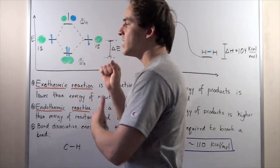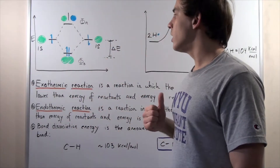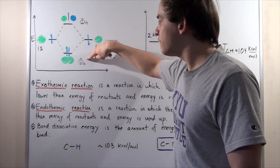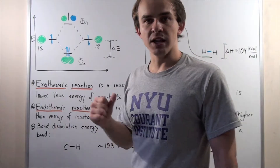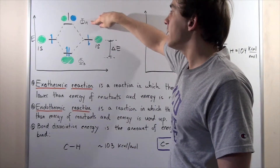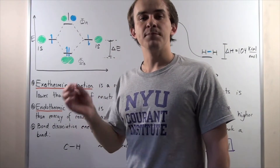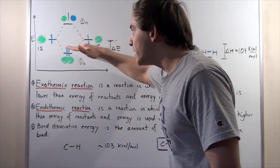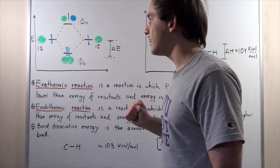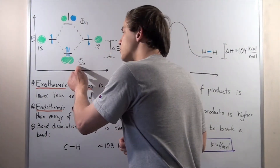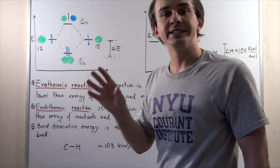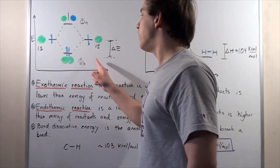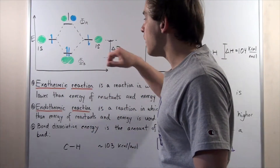If we combine two atomic orbitals, according to quantum mechanics, we're going to form two molecular orbitals. One will be φb, which is the bonding molecular orbital, and the second will be φa, which is the anti-bonding molecular orbital. The bonding molecular orbital is lower in energy and more stabilizing — it's the bond responsible for forming our covalent bond. Our electrons will be found in the lower energy bonding molecular orbital, φb.